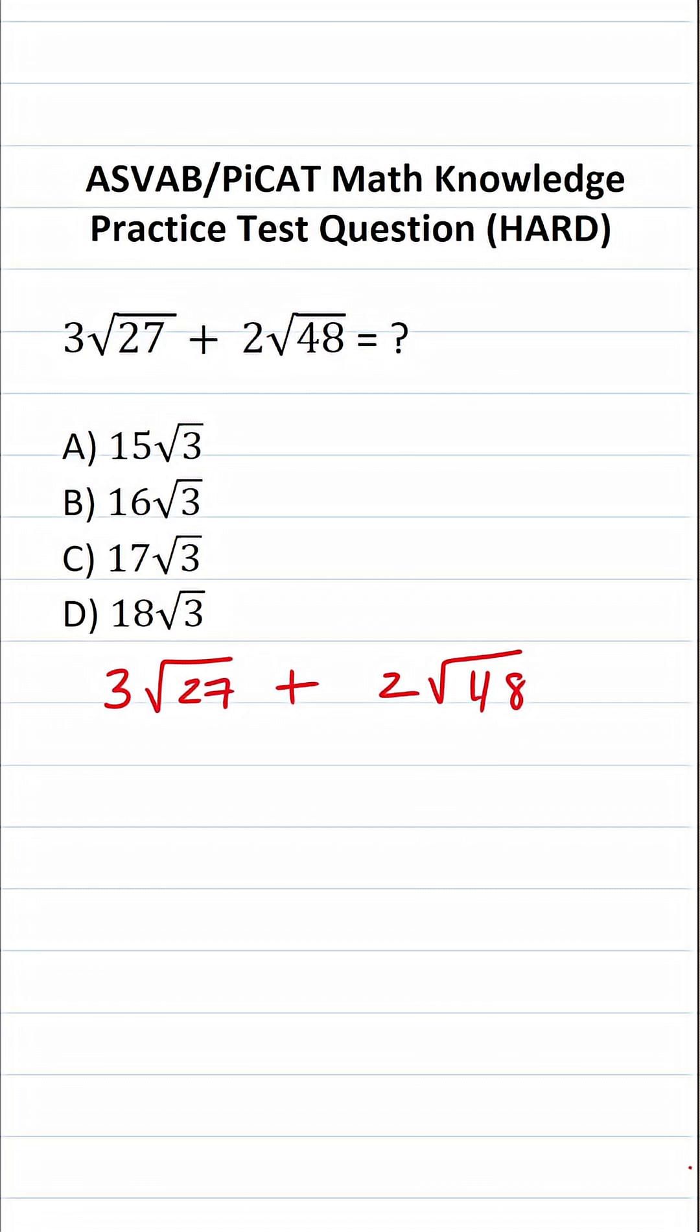Now, for this problem, we're trying to simplify this expression that involves radicals. And for that reason, you have to know some square roots of common perfect squares. So, for example, you should know that the square root of 4 is 2, square root of 9 is 3, and the square root of 16 is 4.